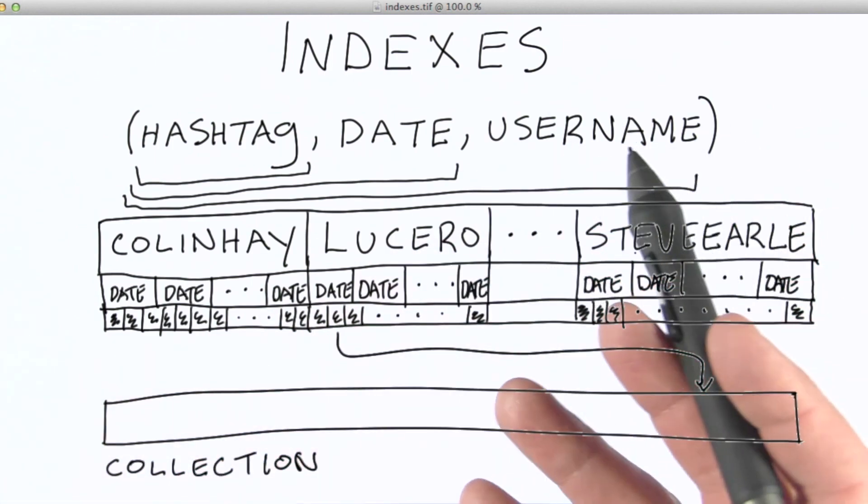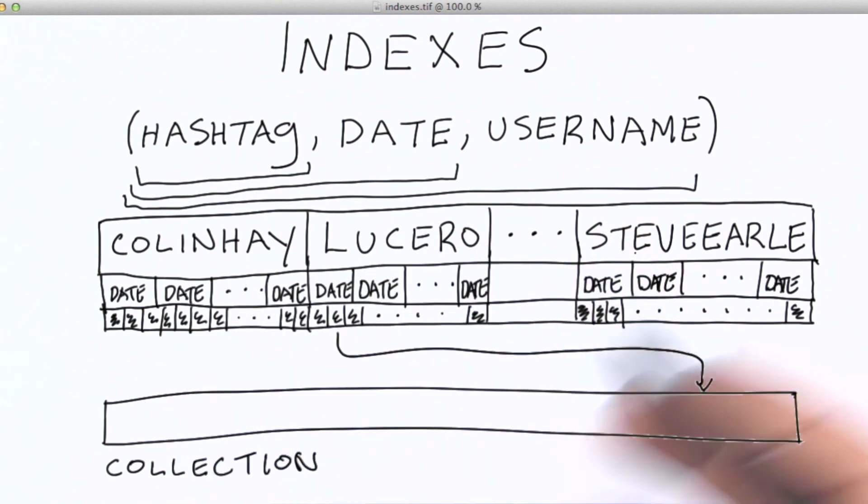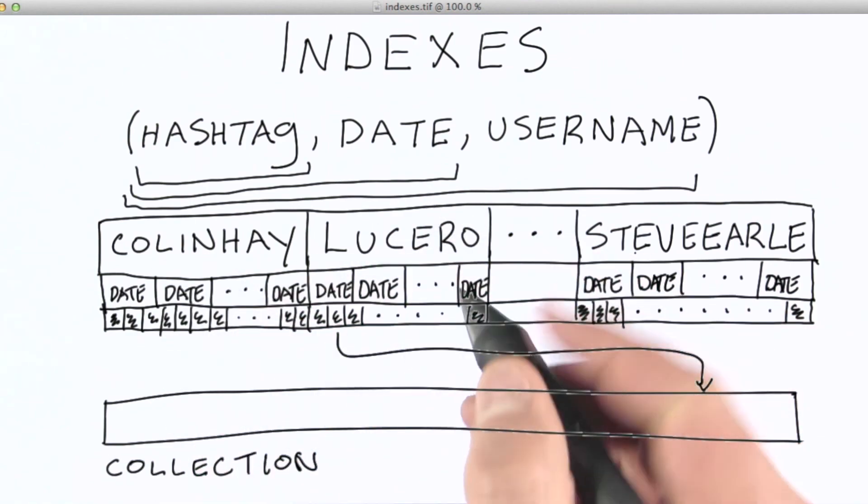Indexes are not costless. They take space on disk. They also take time to keep updated. So you don't want to have an index on every single possible way you're going to query the collection. You instead want to have an index on the ways you're most likely to query the collection.